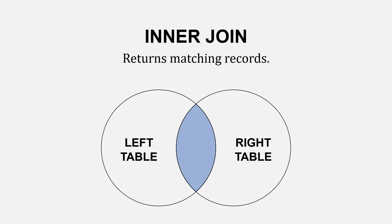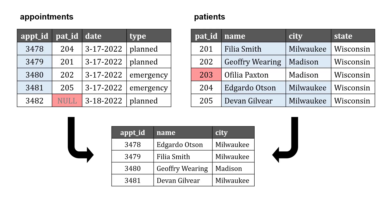Starting with the inner join, which returns matching records — the overlap between the two tables. We get the appointment ID, name, and city where the patient ID overlaps. That's why you don't see data for the appointment where the patient ID is null, or for patient ID 203 in the patients table — they're not overlapping in that relationship.